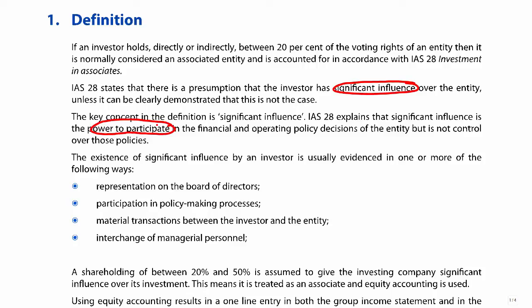The issue is how to establish whether we have influence, and then how to account for that influence. The normal assumption is that if we own between 20% and 50% of an entity, then we are assumed to have influence over that business. However, if you own, say, 19.9% — not quite 20% — that's not necessarily having influence by definition. But if you have any of the following indicators, that might give you evidence of influence even with slightly less than 20%.